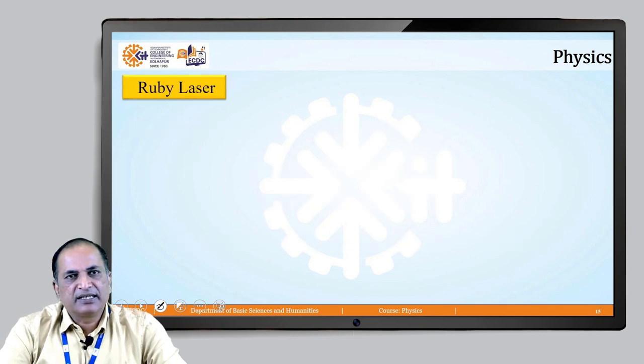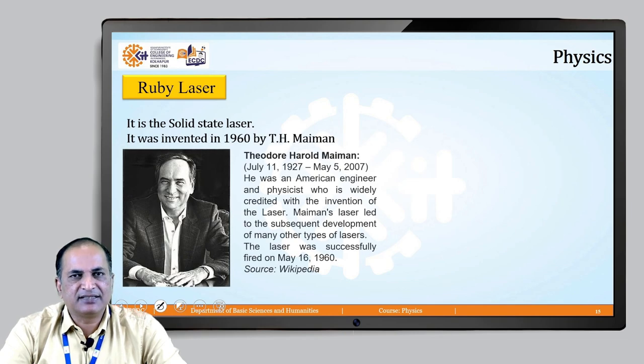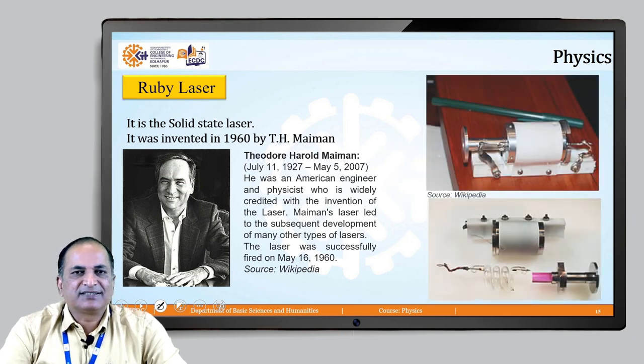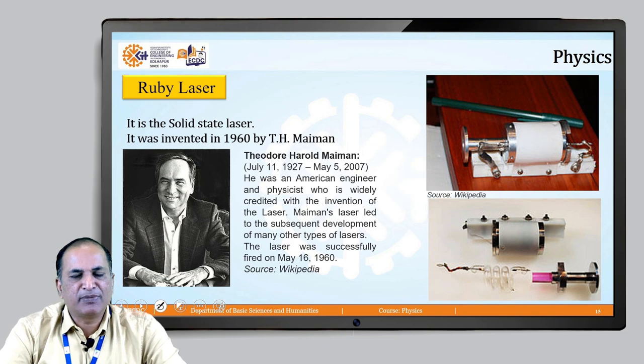Ruby laser is a solid state laser and it was the first laser which was invented in 1960 by T.H. Maiman. Theodore Harold Maiman was an American engineer and physicist who was credited with the invention of laser and his invention actually led to subsequent development of many other types of lasers. The laser was successfully fired on May 16, 1960. You may see in the slide the picture of first laser which was made by T.H. Maiman.